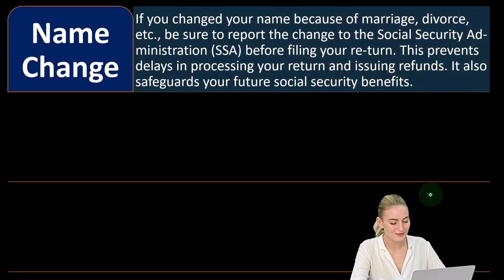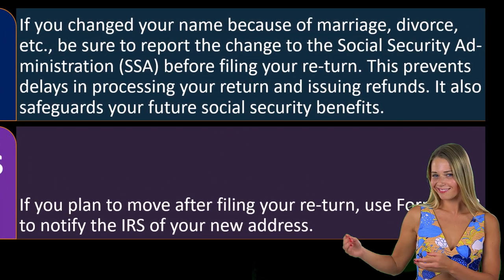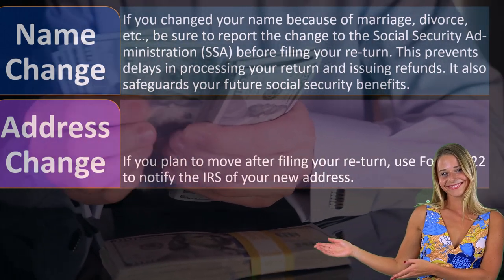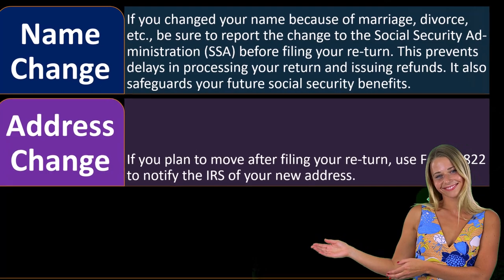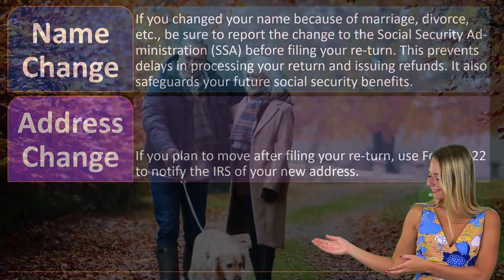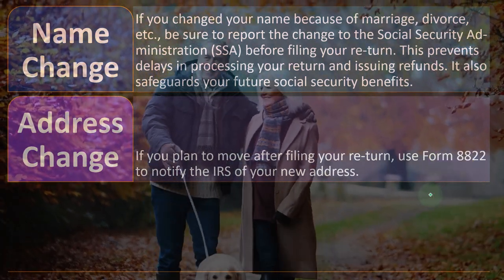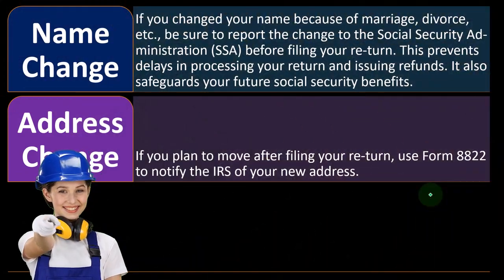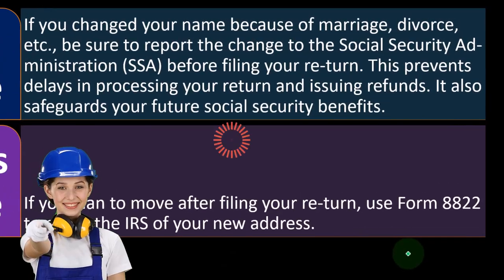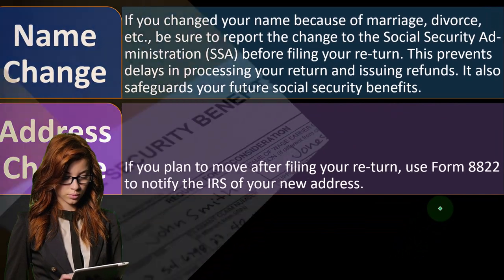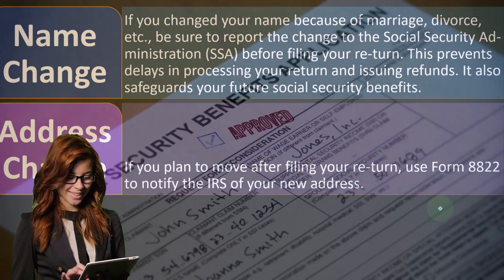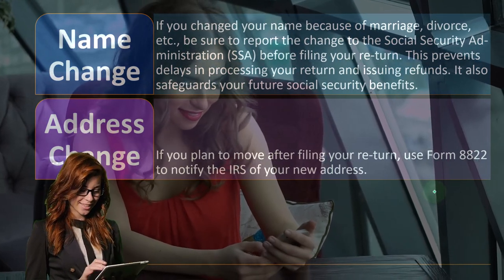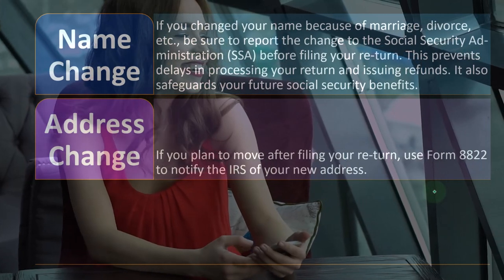Updating your name with the SSA also safeguards your future Social Security benefits. When you pay into Social Security through payroll taxes as a W-2 employee or through self-employment taxes on Schedule C, your retirement benefits will be dependent in part on how much you paid in. You want to make sure the SSA is assigning all contributions to you so that they will maximize the calculation of your benefits upon retirement age.